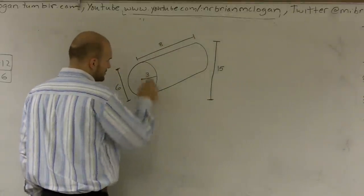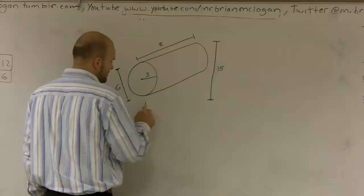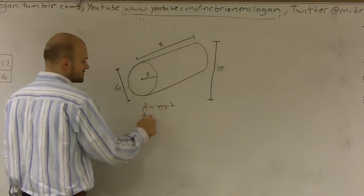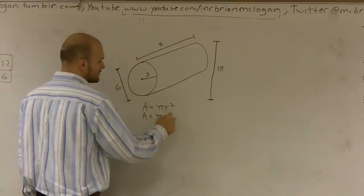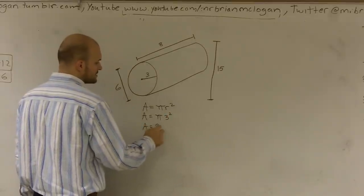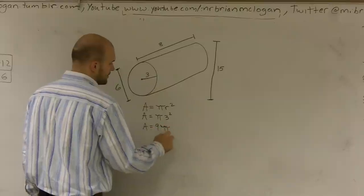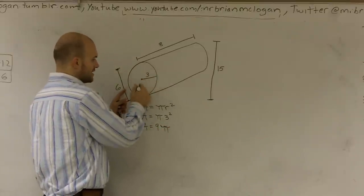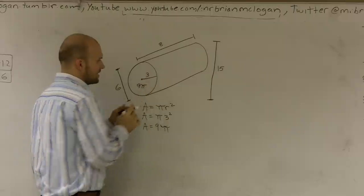And what I'll do is let's do it. So remember, area equals pi r squared. So the area here is going to be pi times 3 squared. Area equals 9 pi. So what I can say is this disk's area is 9 pi.